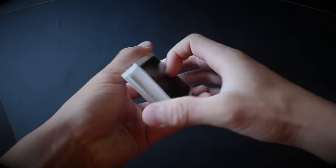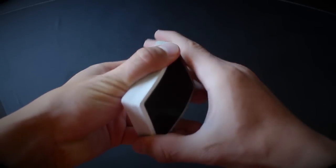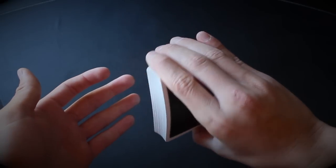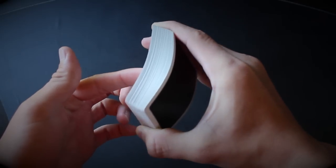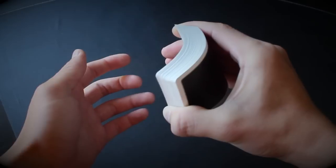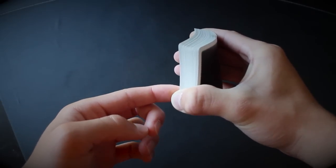To actually do the spring, hold the deck as I just showed you and put a bend in the cards by squeezing with these fingers and your thumb. Because there's less support on the side with only one finger, squeeze and make sure the cards are released from the thumb, not from these fingers.